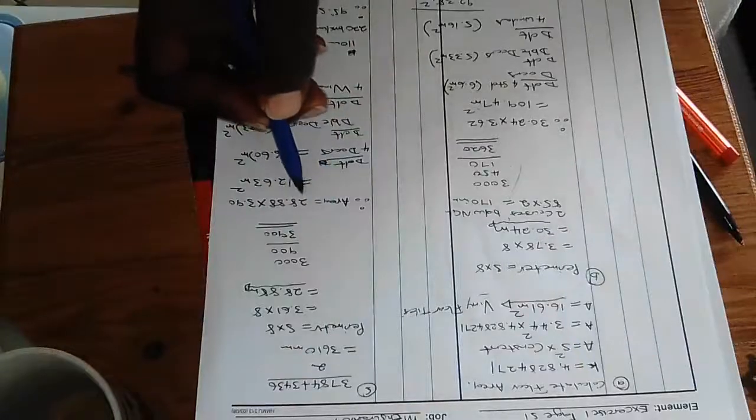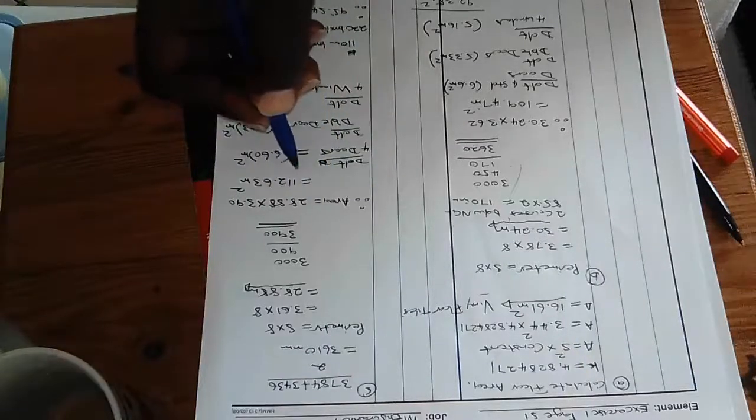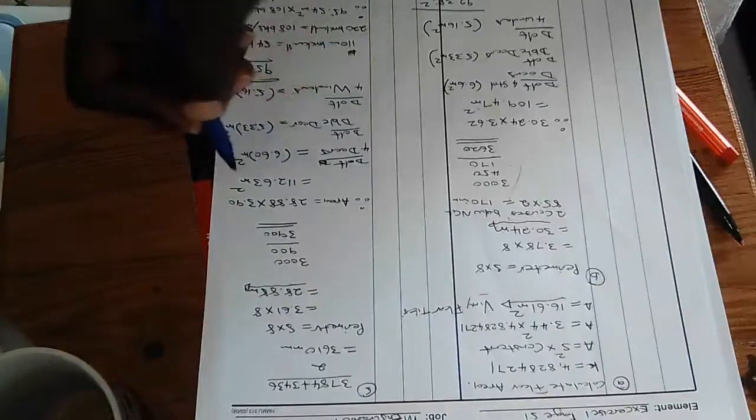So we need to take the perimeter times the height. That will give us 112.63 square meters.